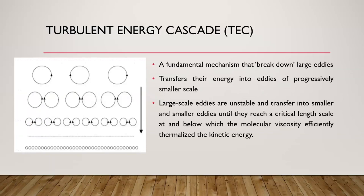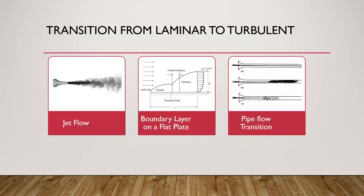The turbulent energy cascade is a fundamental mechanism that breaks down large eddies in fluid flows. Kinetic energy in larger eddies is transferred into progressively smaller eddies. Large-scale eddies are unstable, and energy transfers to smaller and smaller eddies until they reach a critical length scale where viscosity is able to dissipate the kinetic energy.